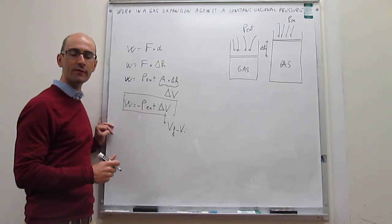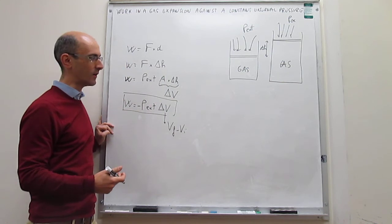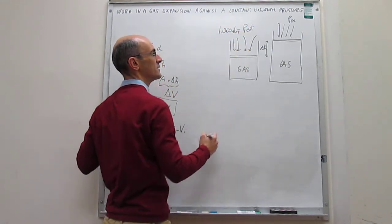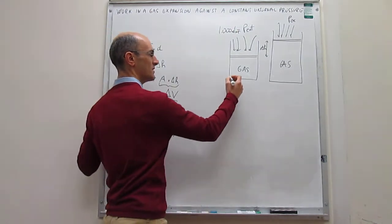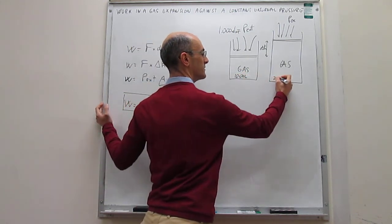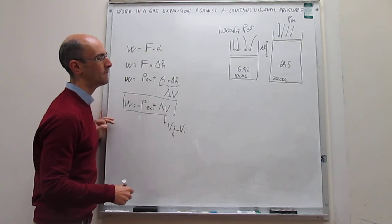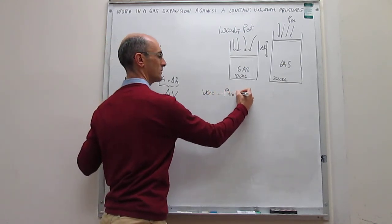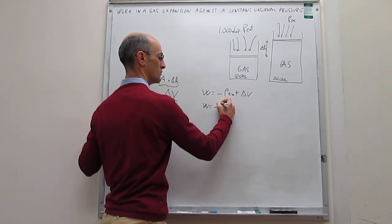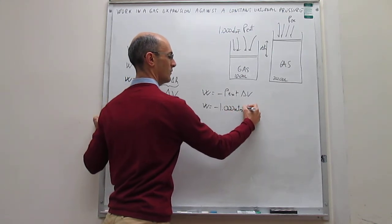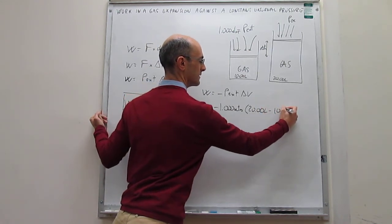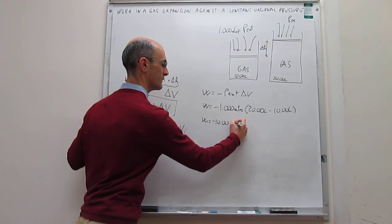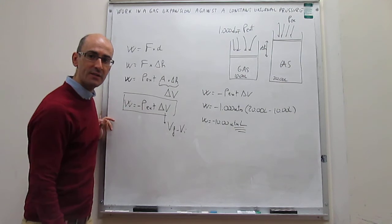We'll now solve a numerical problem to illustrate how to calculate this work. Suppose the external pressure is 1.000 atm — regular atmospheric pressure — and the volume changes from 10 liters to 20 liters, a doubling of the gas volume. Work equals negative P_ext times delta V, which is negative 1.000 atm times (20 liters minus 10 liters), giving negative 10 atmosphere·liters. This is a negative work, which is expected since the system is doing work on the surroundings.